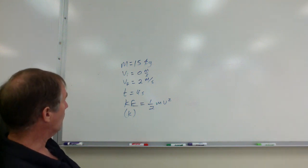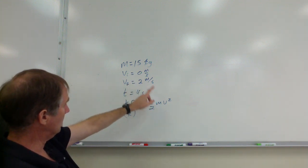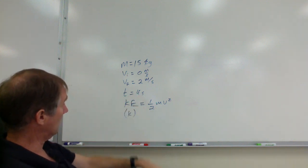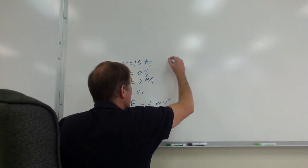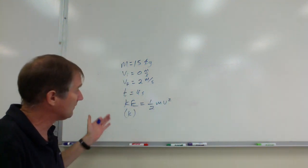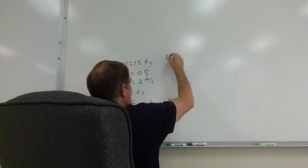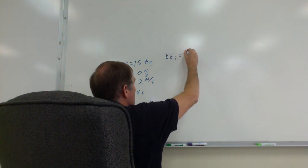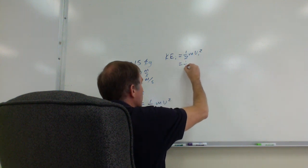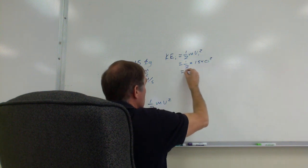We know the mass, the initial velocity, and the final velocity, so we can calculate the initial and final kinetic energies. We're looking for the change in kinetic energy: final minus initial. The initial kinetic energy is one-half times mass times initial velocity squared — that's one-half times 15 times zero squared, which of course is zero joules.